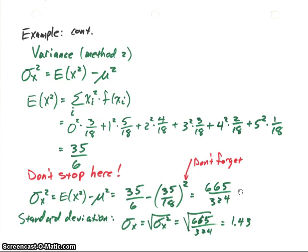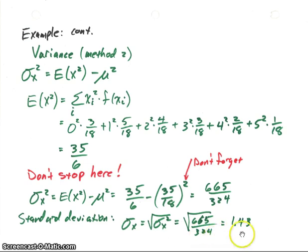A good check: the variance value should not be negative. If you end up with a negative value, you've done something wrong — go back and find the error. The standard deviation is just the square root of the variance: the square root of 665 over 324, which ends up being about 1.43. And that's the end of the first example.